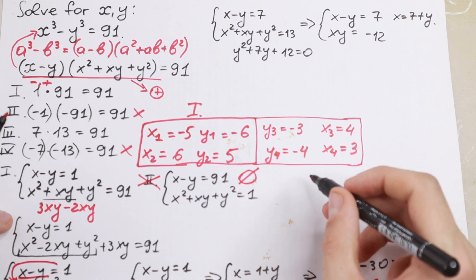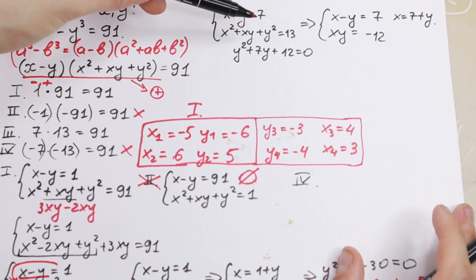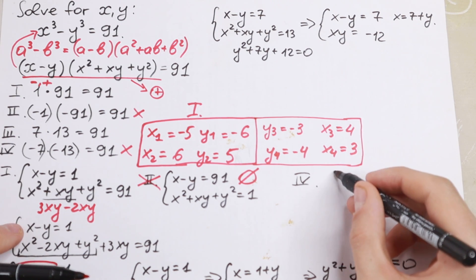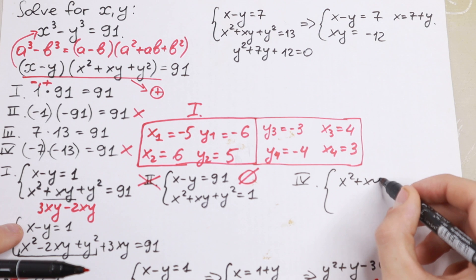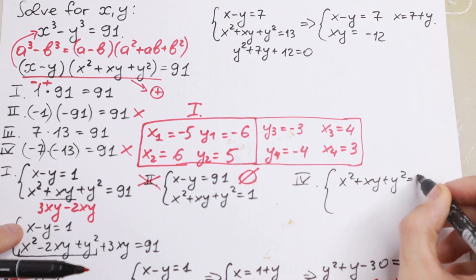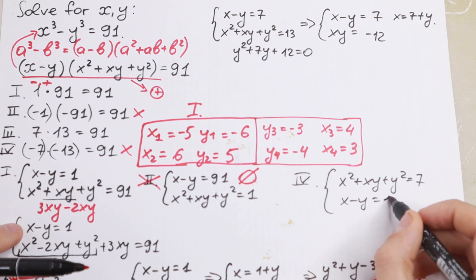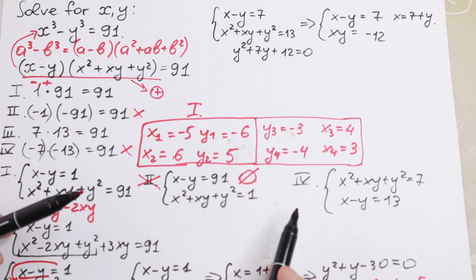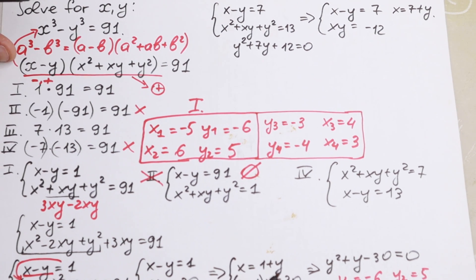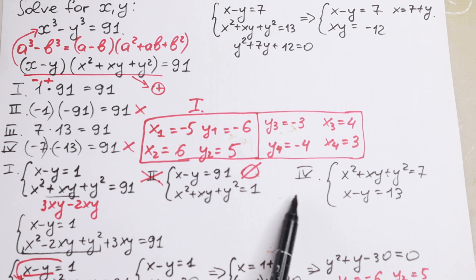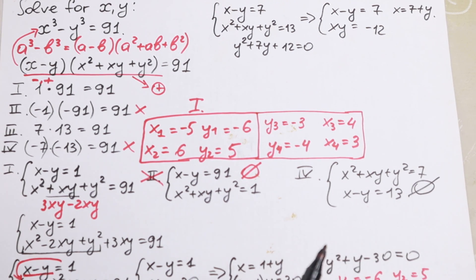For the last case, we swap 7 and 13: x² plus xy plus y² equals 7 and x minus y equals 13. This leads to the same situation as the second case — no real solutions.